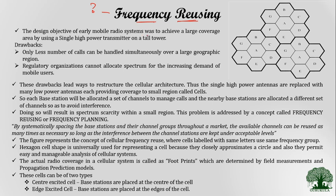So earlier, when the mobile radio systems were developed, they were trying to achieve a large coverage area by using a single high power transmitting antenna on a tall tower. But this particular approach had certain drawbacks. The first drawback is that only a lesser number of calls can be handled over a large geographical region. If we use a high power transmitting antenna, then only fewer calls can be handled in that geographical area, which is not practically acceptable.